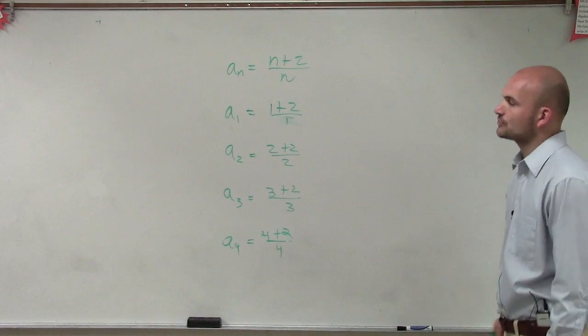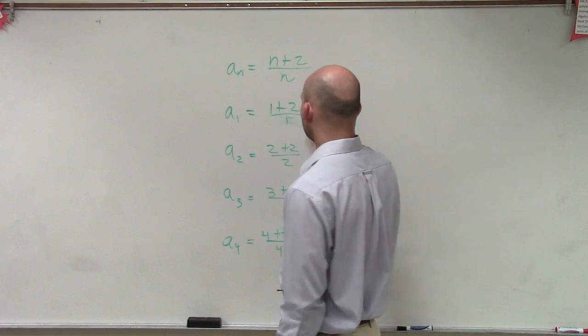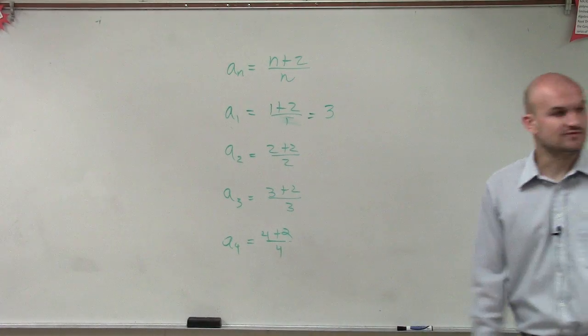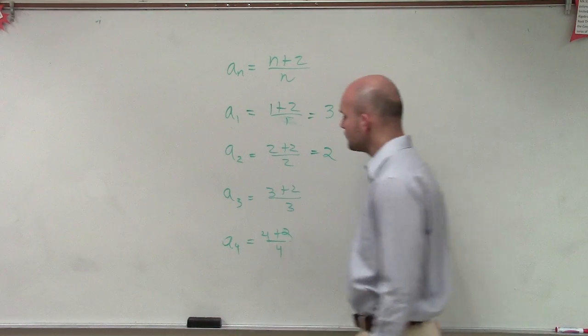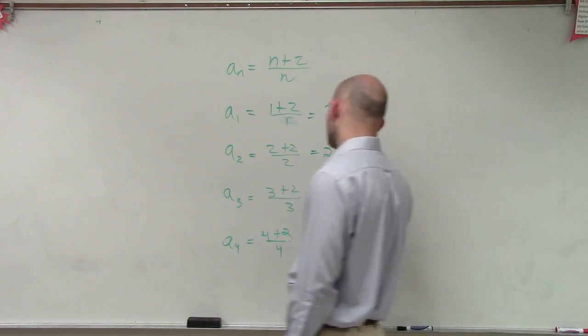So we have 1 plus 2 is 3, 3 divided by 1 is 3. 2 plus 2 is 4, 4 divided by 2 is 2. 3 plus 2 is 5, 5 divided by 3 is 5 thirds.